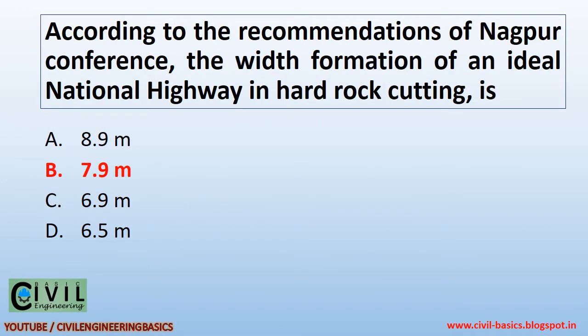According to the recommendations of the Nagpur Conference, the width of formation of an ideal national highway in hard rock cutting is 7.9 m.